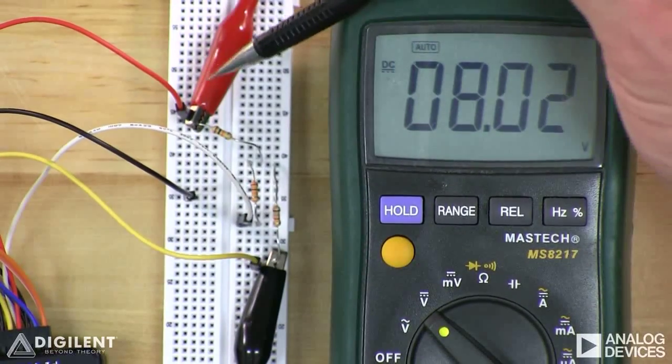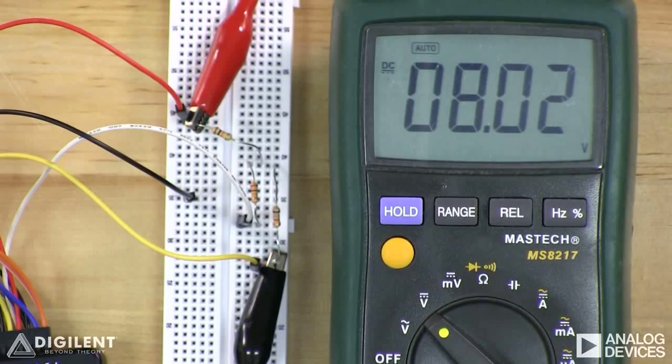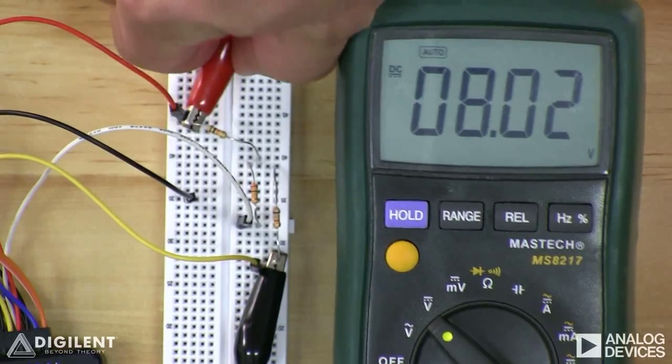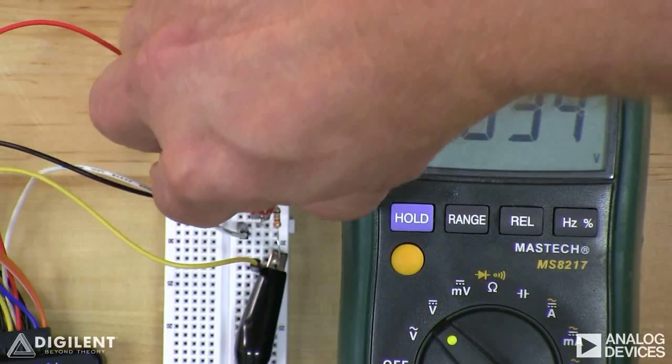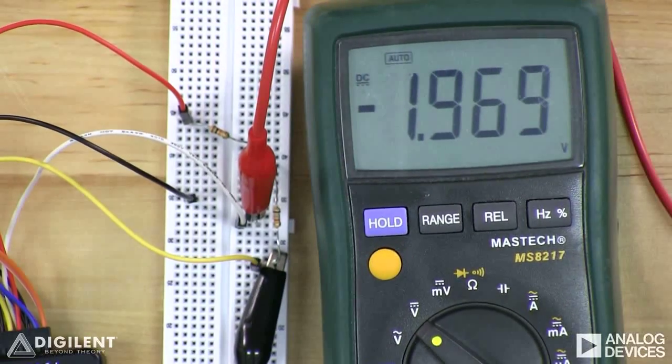As you can see, the voltage between nodes A and C is about 8 volts, while the voltage difference between nodes B and C is about negative 2 volts.